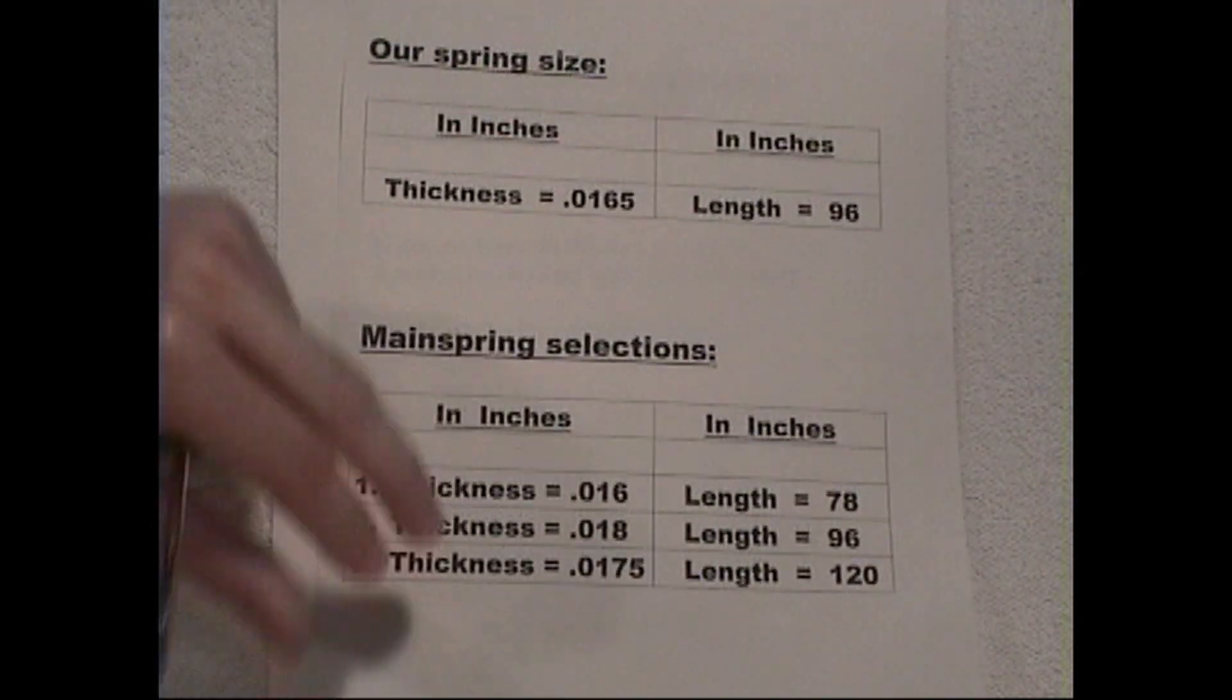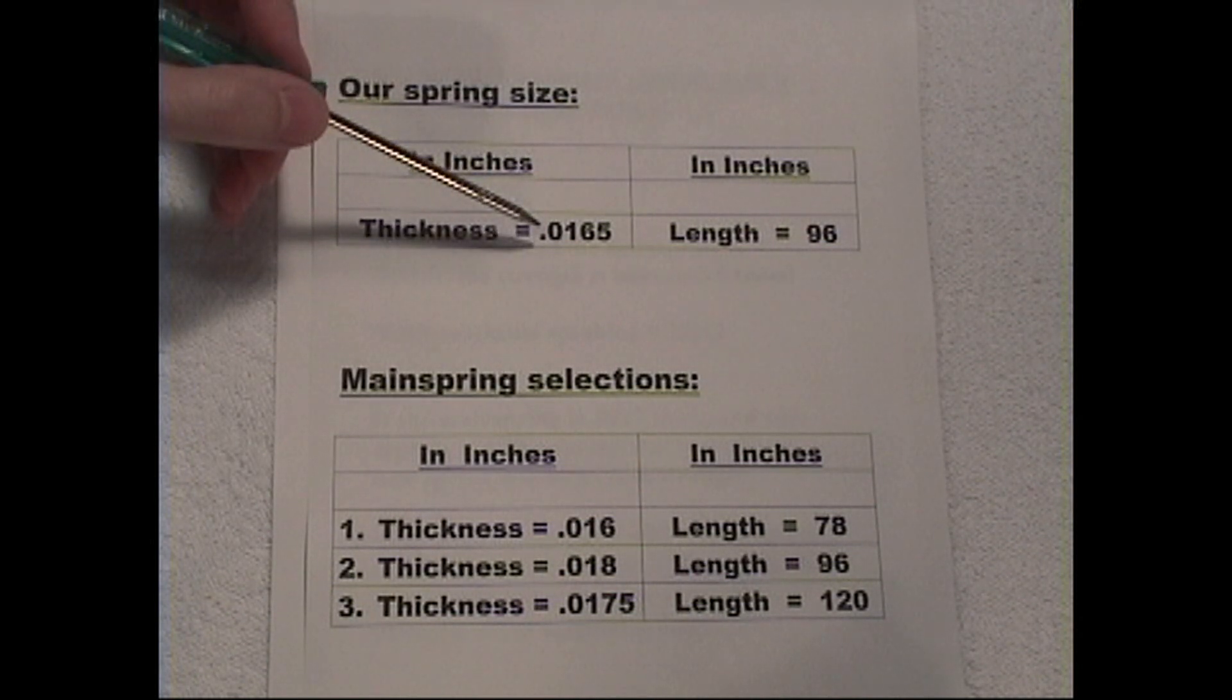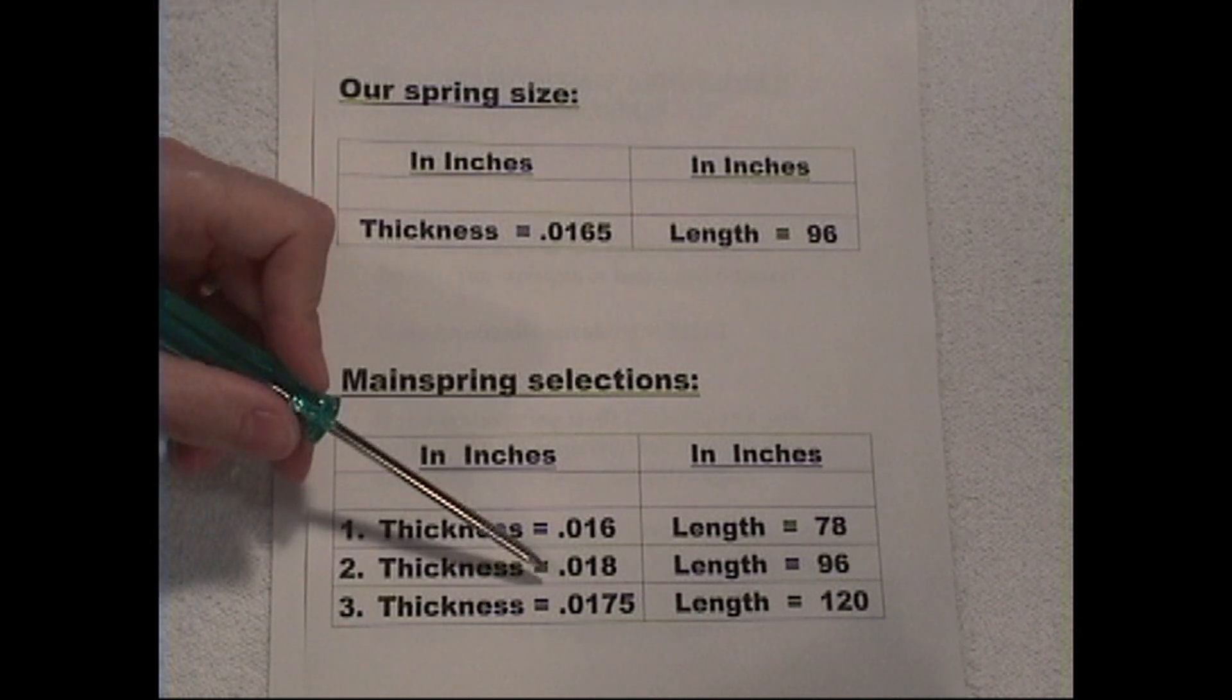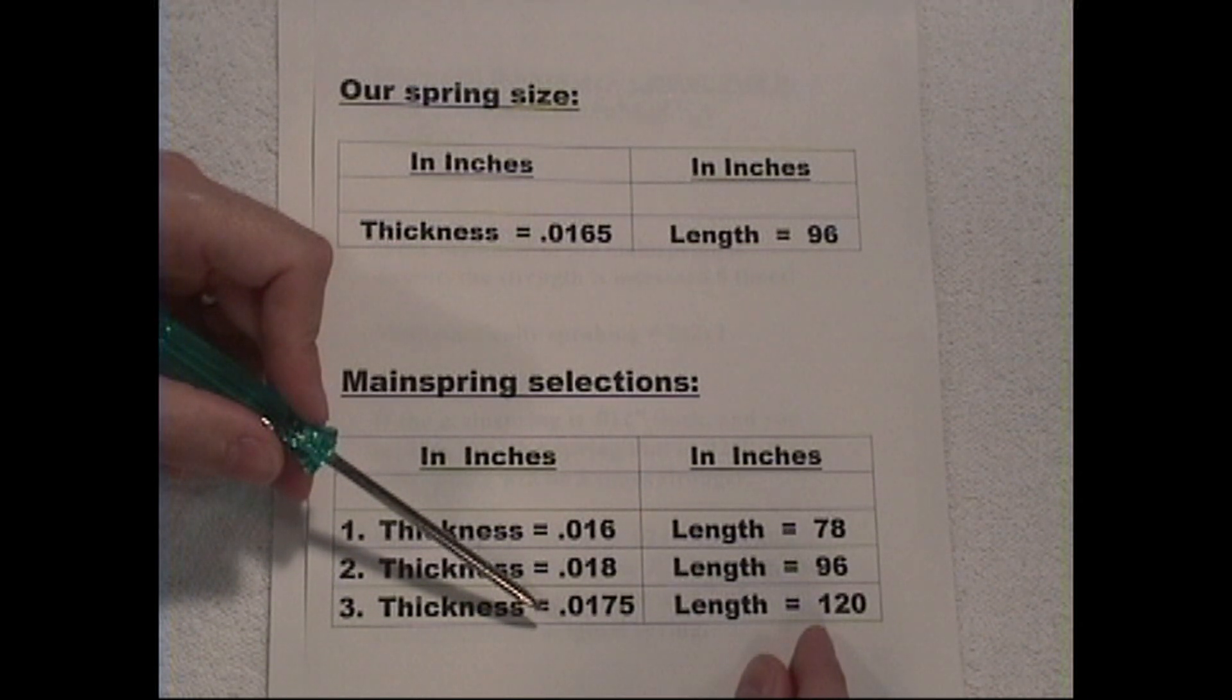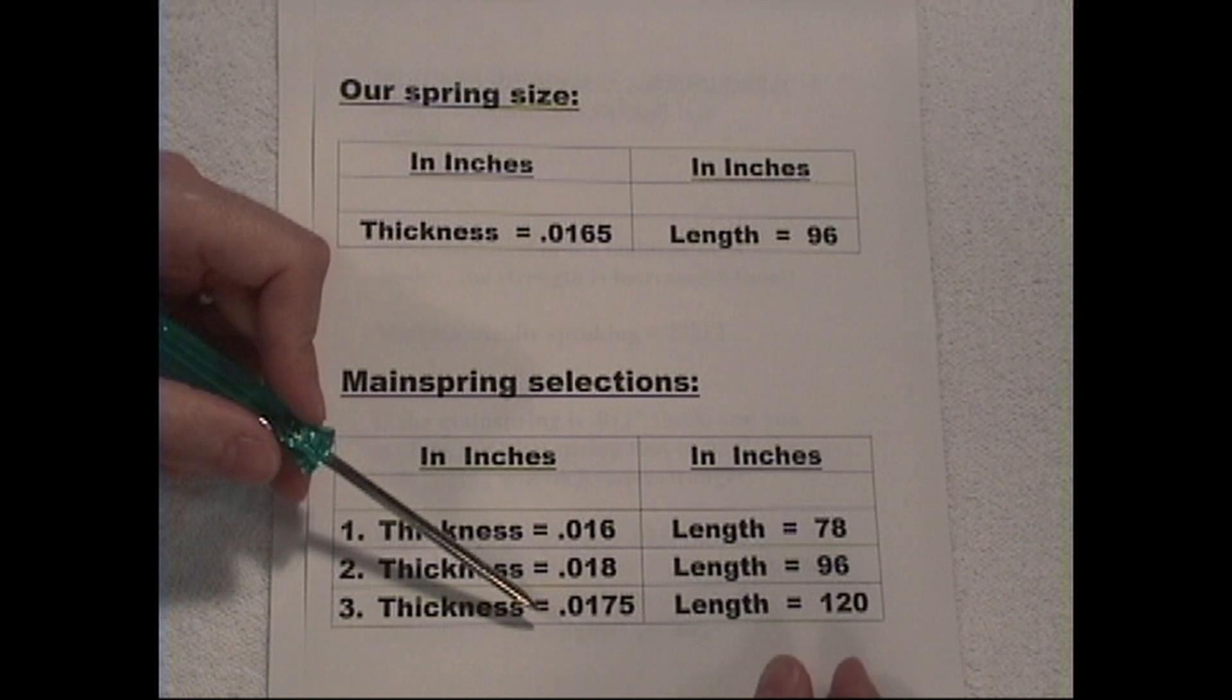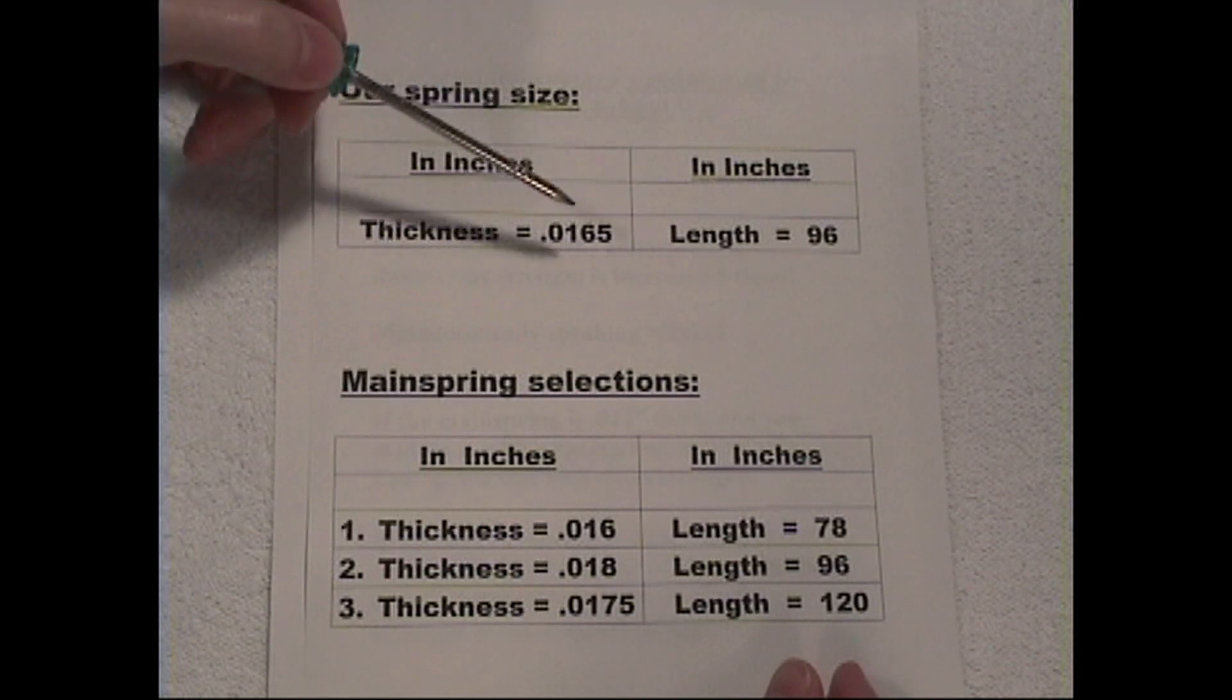So in looking at our original selections here, we're sixteen thousand five hundredths thick. To go to eighteen thousandths, that could be a big difference. But here we're only going to seventeen thousand five hundredths, which is still quite a bit higher, which is a full thousandths higher than sixteen thousand five hundredths, but we're reducing the power by the length because we're going to one hundred twenty inches versus ninety-six. So this could be a possible good replacement, but this might be too. What we'll need to do is mathematically solve to see which of these two would be the best replacement for our spring.